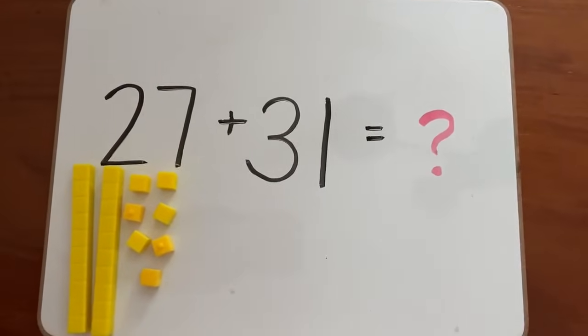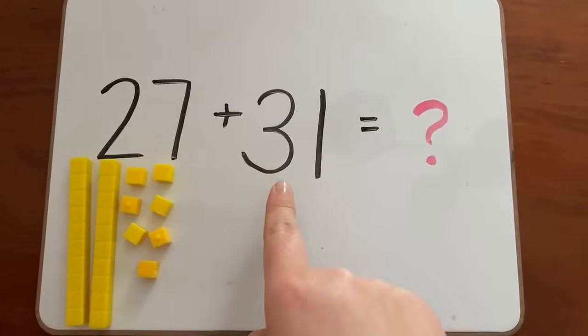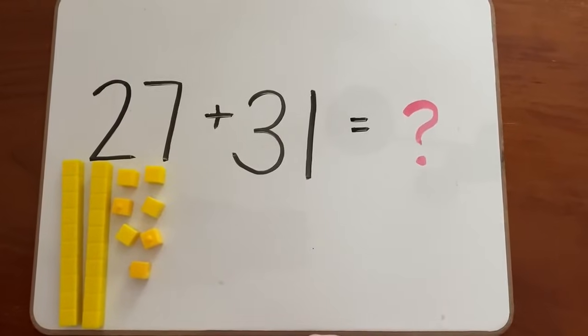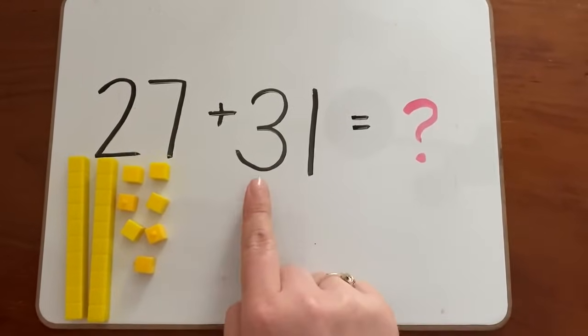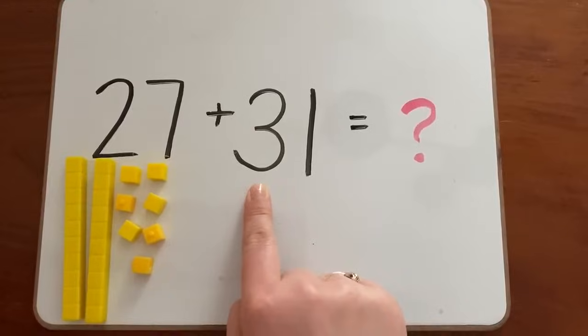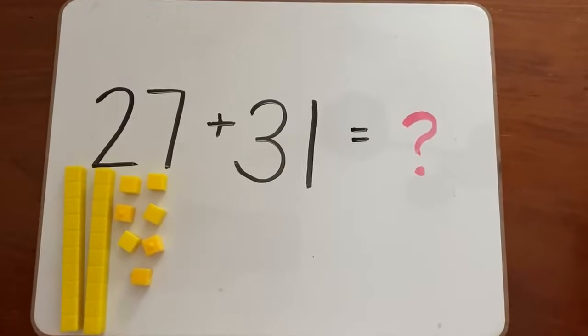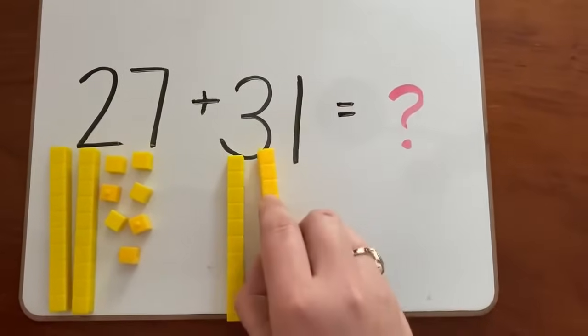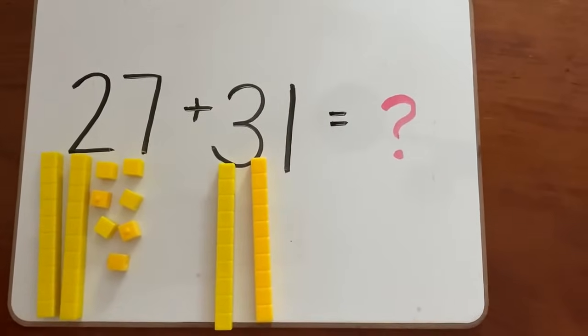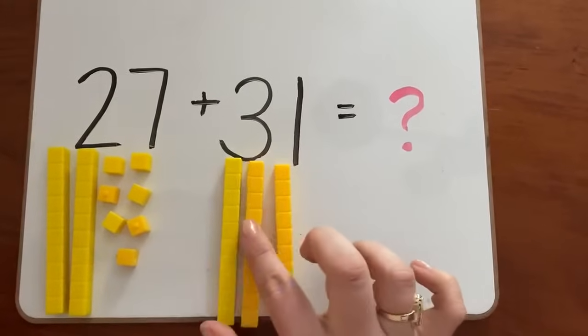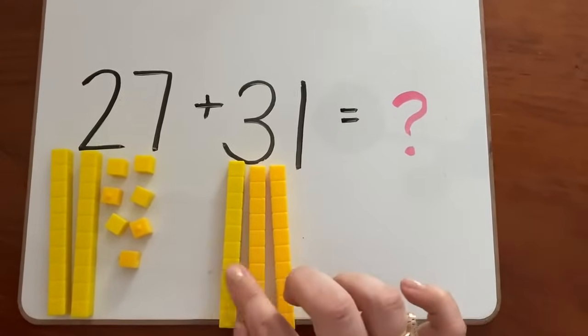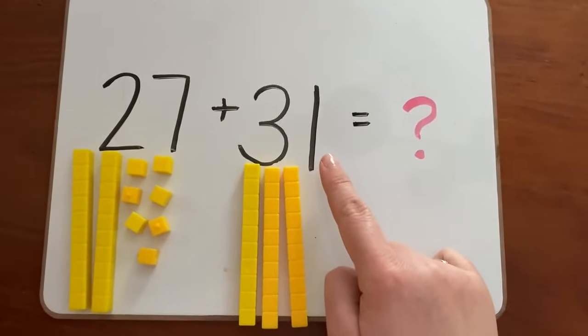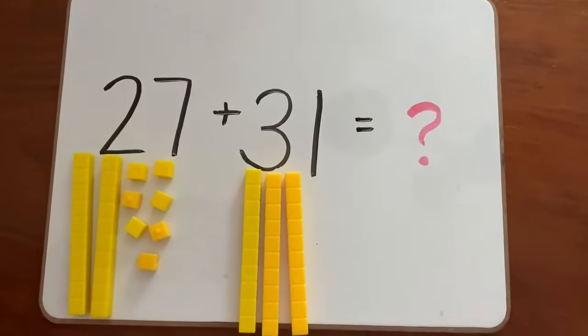Now we need to make the number 31. How many tens are in the number 31? There are three tens in the number 31. So we'll need three longs to make this number. And then how many cubes do we need? There's only a 1 in the ones place, so we need one cube.